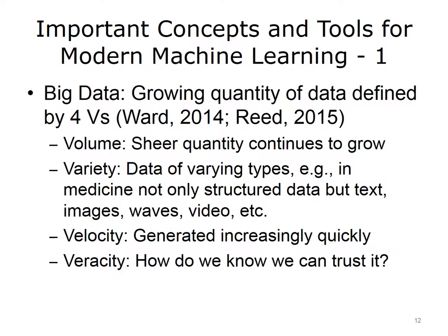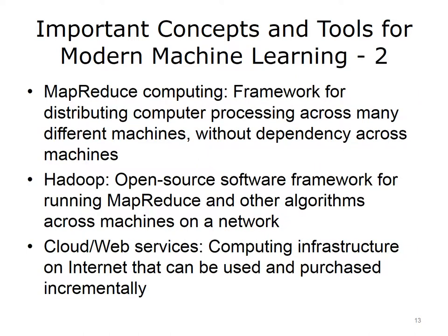There are some important concepts and tools for modern machine learning. We often hear the term big data, referring to the growing quantity of data that's available, though it's not just about the amount. Big data is defined by the four Vs. The first V is volume — the sheer quantity continues to grow. The next V is variety, meaning many varying types of data, especially in medicine, including structured data such as lab tests and prescriptions, but also text, images, waves, video, and more. Big data is also characterized by velocity, in that it is generated continuously and comes at us quickly. Finally, there is veracity, as we have to know that we can trust the data source.